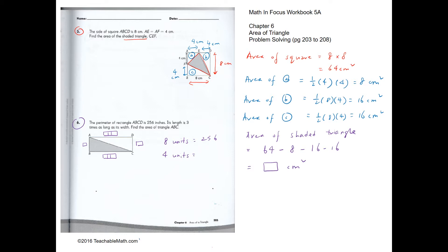To find one unit: half of 256 is 128 (four units), half of that is 64 (two units), so one unit is 32. The width is 32, and the length is 32 times 3, which is 96. So the area is 32 times 96 inches squared.